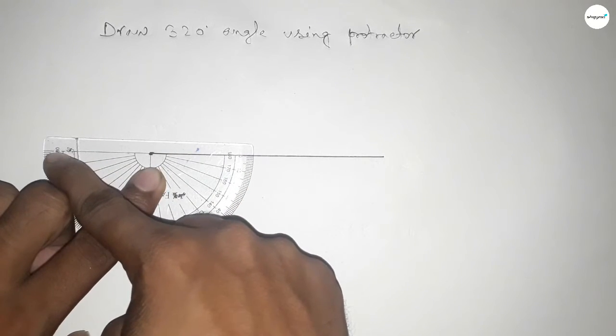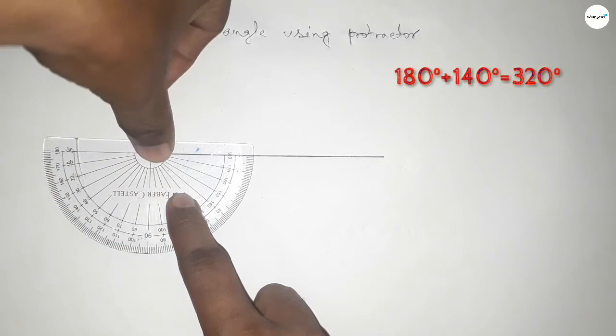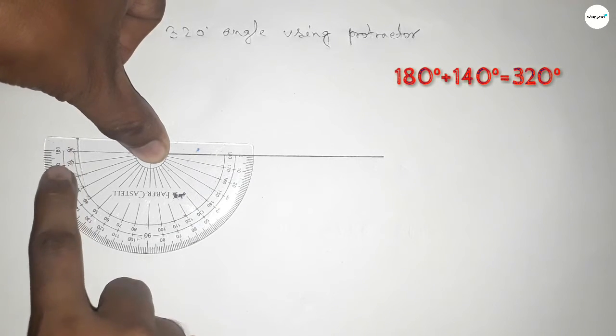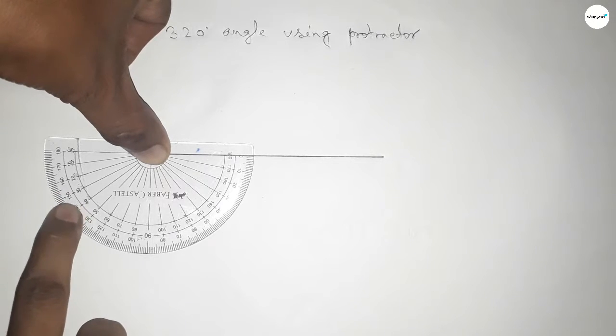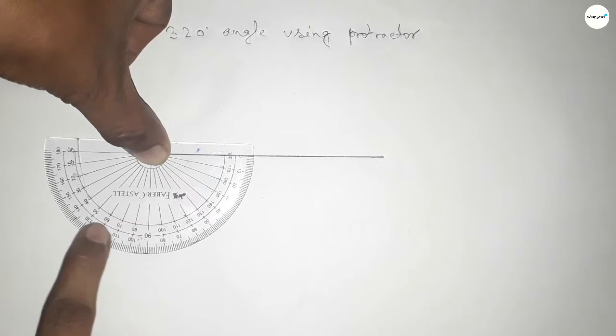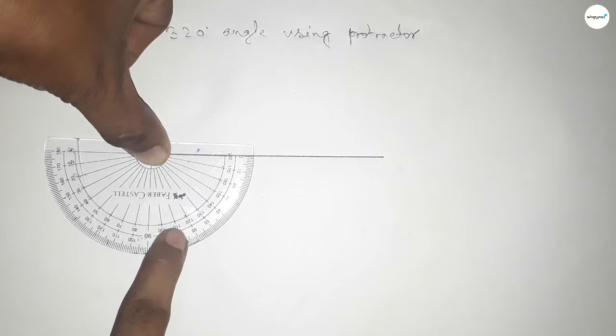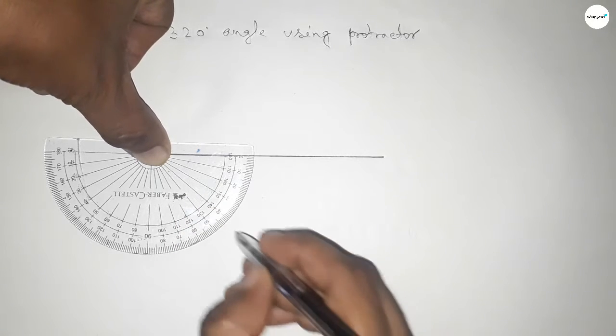This is up to 180-degree angle, but we have to draw a 320-degree angle. So if you add extra, this is 10, 20, 30, 40, 50, 60, 70, 80, 90, 100, 110, 120, 130, and 140.